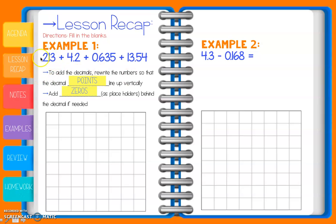A couple of things to keep in mind — our first number doesn't have a decimal point. If it's out of sight, it's all the way to the right. So on whole numbers, the decimal point is all the way to the right. We're going to use our graph paper to line those decimal points up — one number per box to keep it all nice and neat.